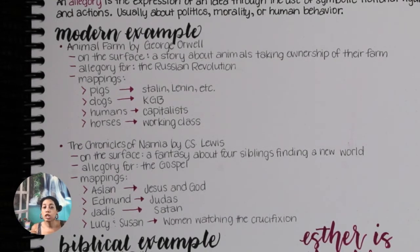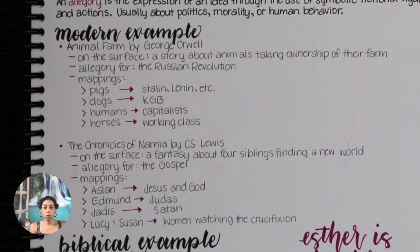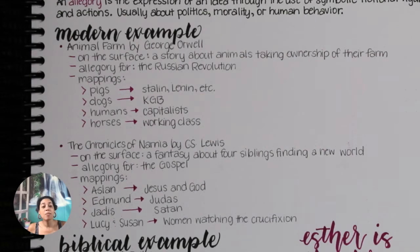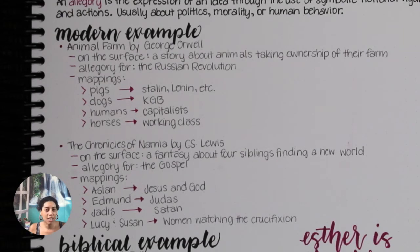Edmund represents more of a Judas character. Edmund is one of the siblings transported into Narnia, and he sells his siblings out for some sweets, the same way Judas sells Christ out for 30 pieces of silver. In the end Edmund is very sorry and regrets what he has done — he sees the wrong of his actions the same way Judas does. But because this is a children's story, Edmund is redeemed, ends up becoming a king of Narnia and is forgiven.